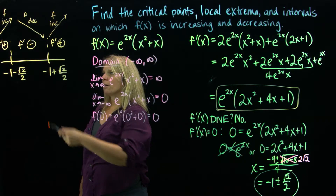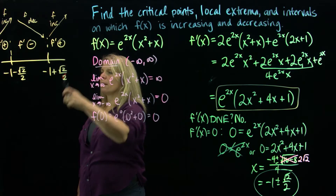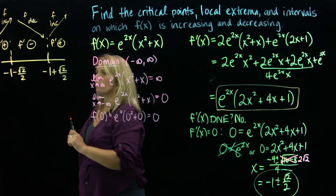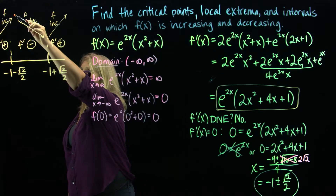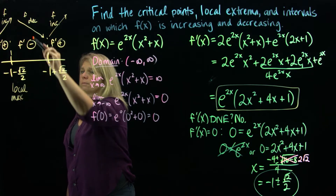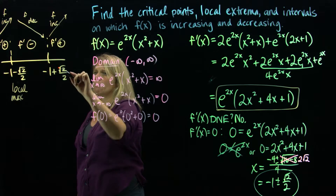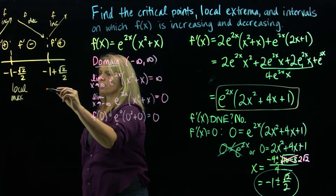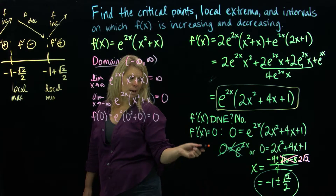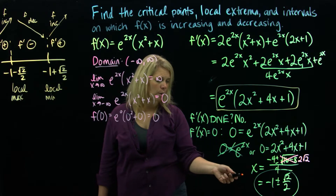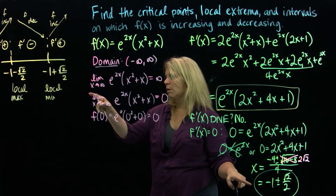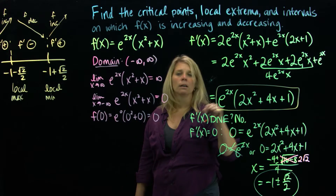A positive derivative means the original function is increasing; a negative derivative means it is decreasing. So the function goes up, then down, then up. Thinking about this visually, x = −1 − √2/2 is at a high point on the graph — that's a local maximum. And x = −1 + √2/2 is at a low point — that's a local minimum.